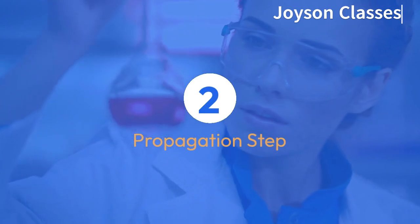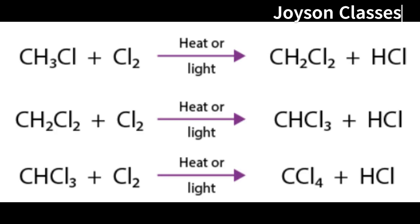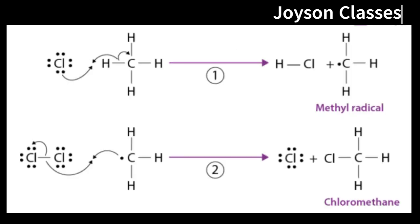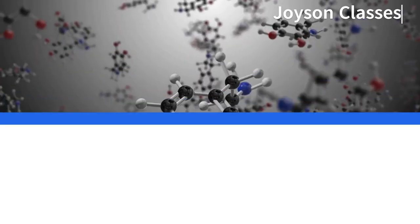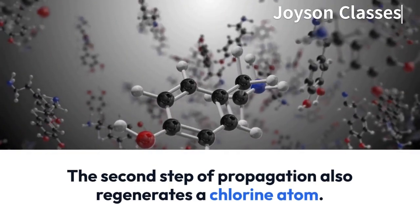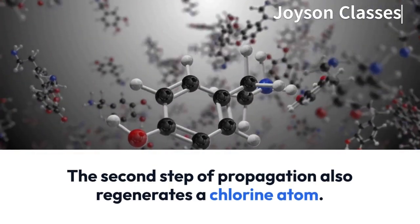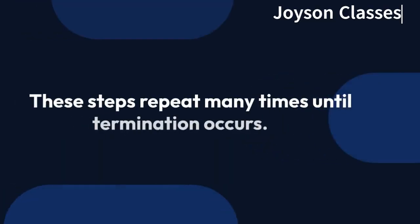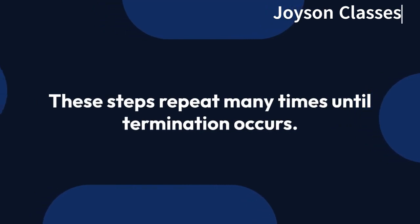Propagation steps: A chlorine radical abstracts a hydrogen atom from methane to produce the methyl radical. The methyl radical in turn abstracts a chlorine atom from a chlorine molecule, and chloromethane is formed. The second step of propagation also regenerates a chlorine atom. These steps repeat many times until termination occurs.